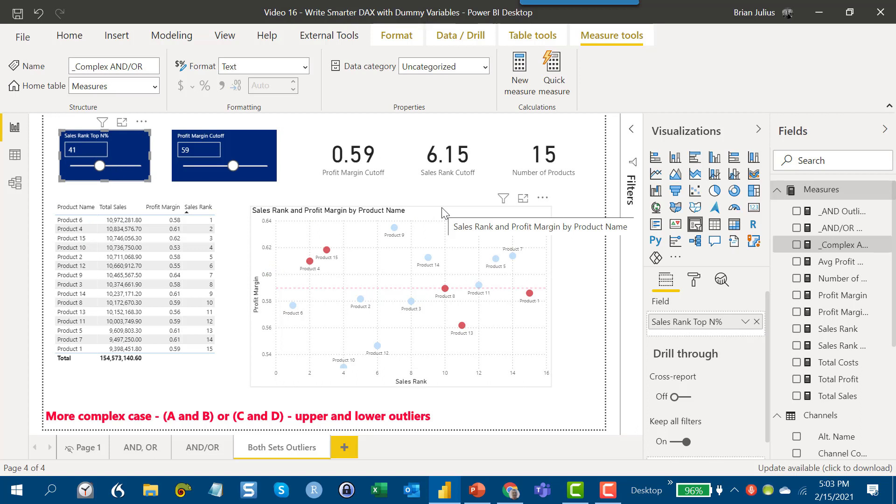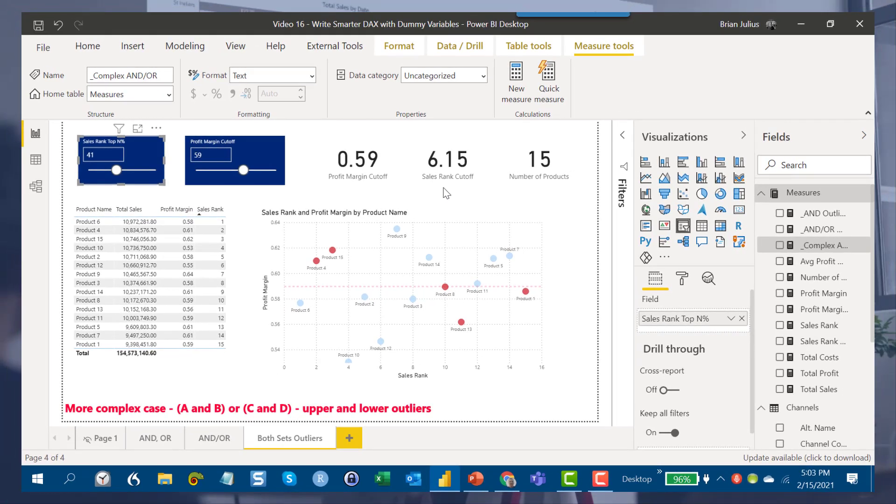So what you can see here is just by using these dummy variables, these one-zero variables instead of the text true/false, and getting the opportunity to use those arithmetic operators, you can combine those in all sorts of ways that really simplifies the DAX and provides you with some powerful logic. So I hope you found that useful.